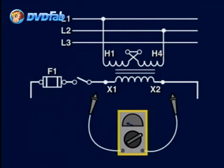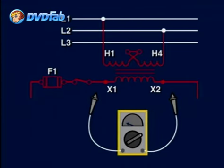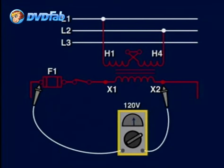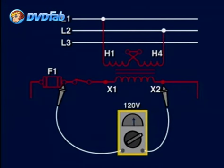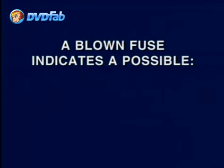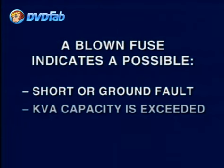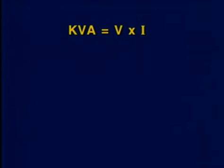Next, we would check the fuse protection to the control circuit. We close the disconnect and measure the voltage from the load side of the fuse to the X2 side of the transformer — we should read close to 120 volts AC. If no voltage is read, then the fuse is bad. If the fuse is blown, we would need to replace it. However, this condition could indicate that a possible short or ground fault could have occurred in the control circuit, thus blowing the fuse, or that the KVA power of the transformer was too small for the number of loads in the circuit.